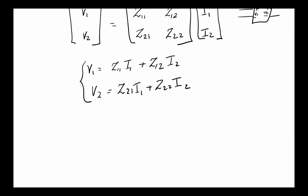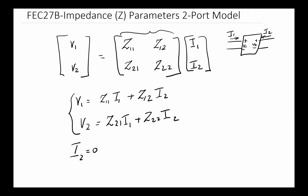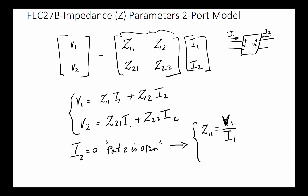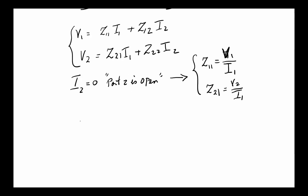We can simplify by making assumptions. If we assume I2 = 0, that means port 2 is open. Plugging into the two equations, we get two relationships: Z11 = V1/I1 (from the first equation) and Z21 = V2/I1 (from the second equation).